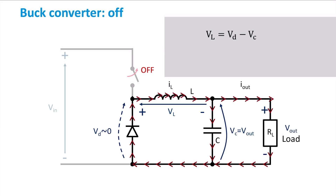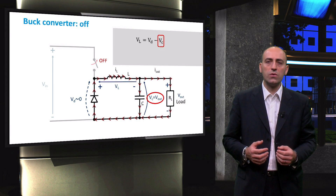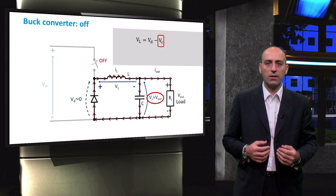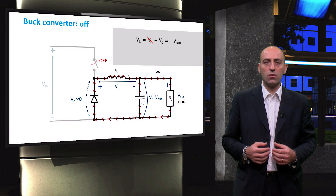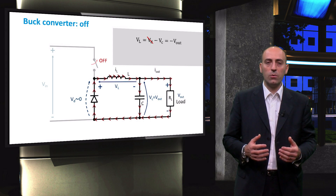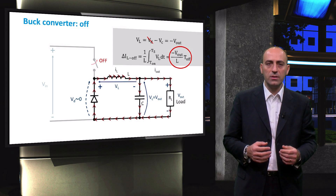With Kirchhoff's law during the OFF mode, we obtain the voltage across the inductor, expressed as the difference between the voltage across the flyback diode and the voltage across the capacitor, or the output voltage. We should also consider that the voltage across the diode requires only a very small bias to start conducting — most of the time this voltage is negligible, in the range of 0.7V or even less. Therefore, the voltage across the coil is just the opposite of the voltage across the load, and the current through the coil starts to decrease.